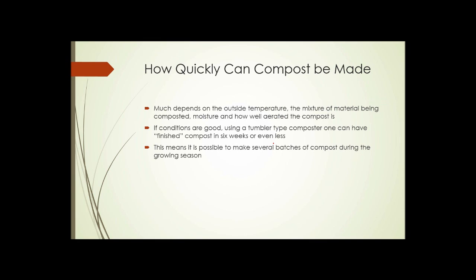Notice also that the outside of this composter is a dark color, which will aid in getting heat coming in. So how quickly can compost be made? Much depends on the outside temperature, the mix of materials being composted, the moisture and how well aerated it is. If conditions are good using a tumbler type composter, one can have finished compost in six weeks or even less.